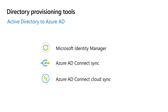Cloud Sync is part of the directory provisioning solutions that enable synchronization between your on-premises Active Directory and Azure Active Directory in the cloud. Today, directory provisioning can be done using multiple solutions, including Microsoft Identity Manager, commonly referred to as MIM, Azure AD Connect Sync, and Azure AD Connect Cloud Sync. Each of these technologies was built to address different needs, scenarios, and use cases, so understanding them will help you determine the correct solution for your organization.